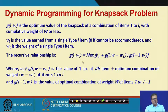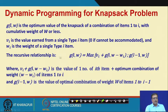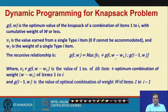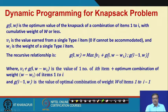Let us understand the recursive relationship. g(i, w) is the optimum value of the knapsack combining items 1 to i with cumulative weight w or less. Here v_i is the value of item i and w_i is its weight. If I deduct the item weight, then w − w_i is the remaining weight, and g(i, w − w_i) gives the optimal value for that remainder. Since we fill g(i, w) starting from the minimum weight upward, g(i, w − w_i) has already been computed.